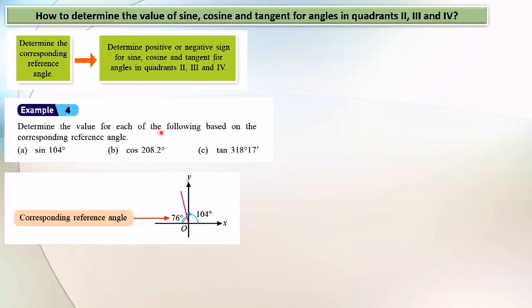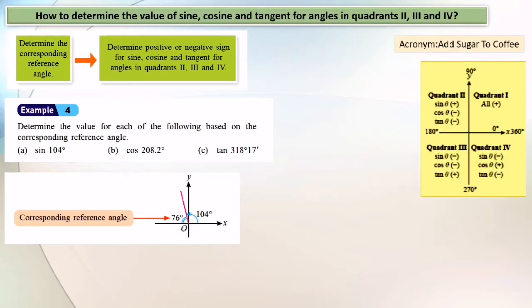Determine the value for each of the following based on the corresponding reference angle. Part A: sine 104 degrees. Still remember how to find the corresponding reference angle? The corresponding reference angle is 76 degrees.